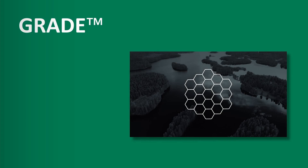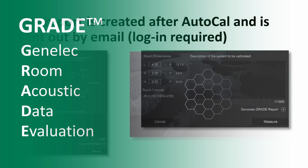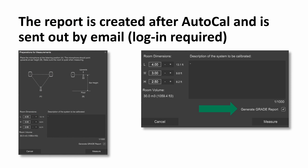Let's start. How do you get your GRADE report? This is done directly before AutoCal. If you click on start calibration, you will see this new window in 4.2, which offers you the option to enter your room dimensions — important for the time domain — and you can find a small checkbox saying 'generate GRADE report'. Because this report will be sent to you by email, you will have to be logged in. Just check this box and you will receive your report after a few minutes after you've finished AutoCal.